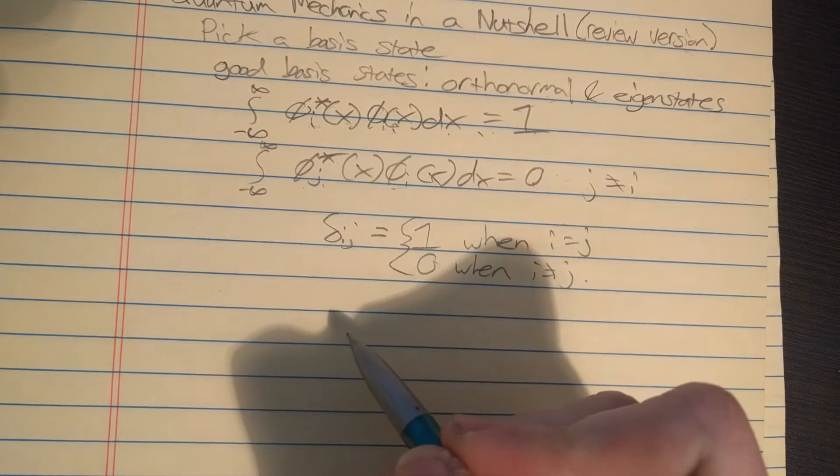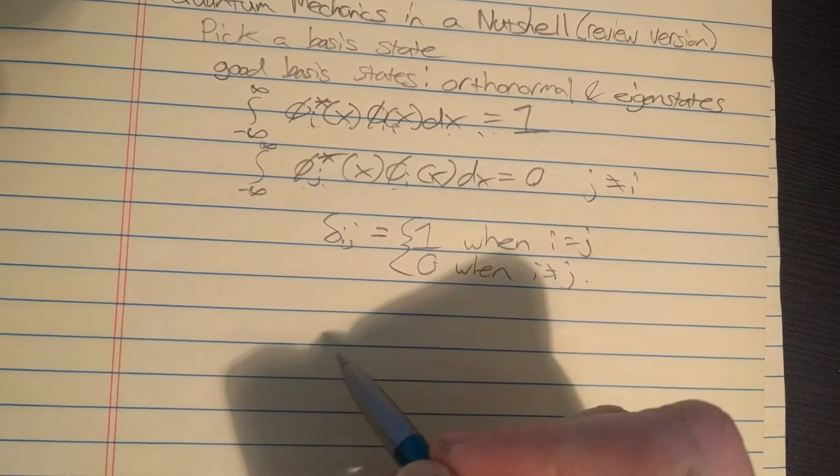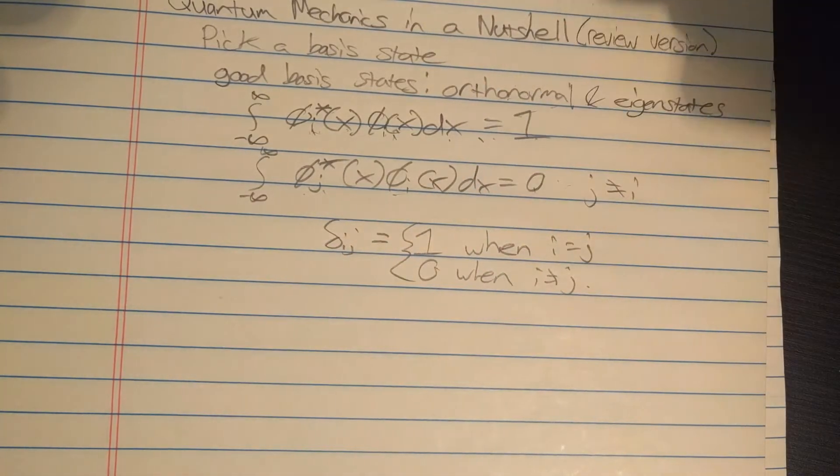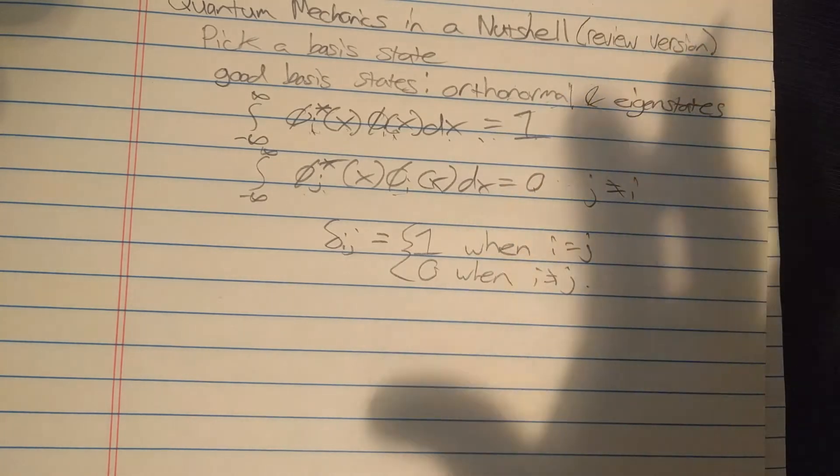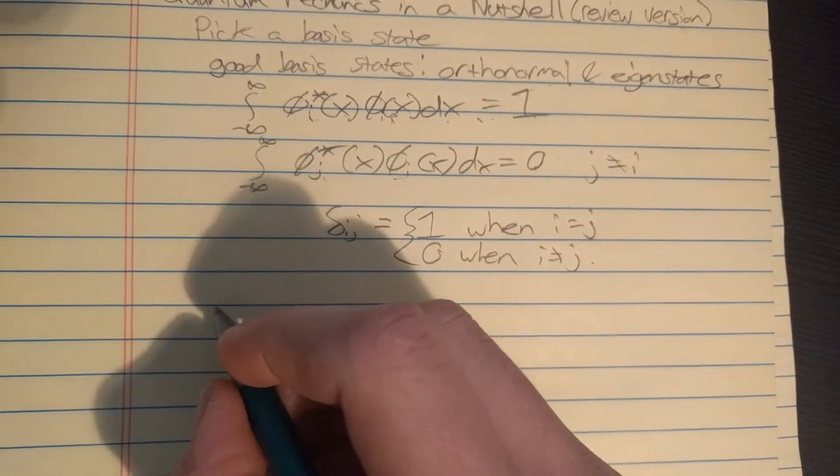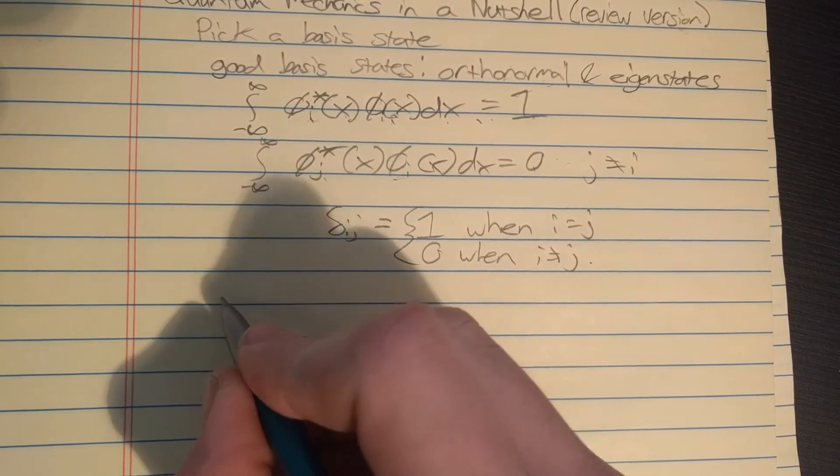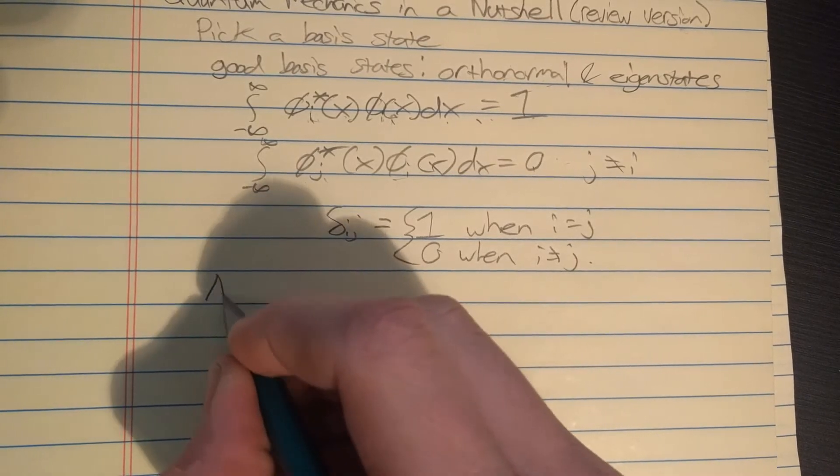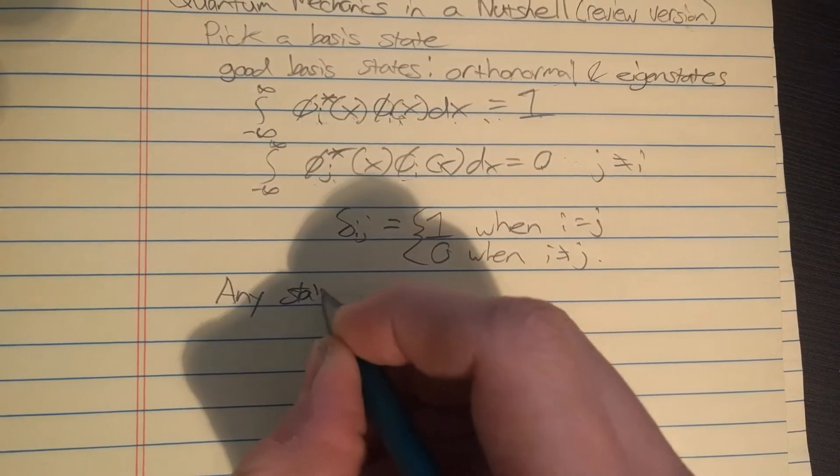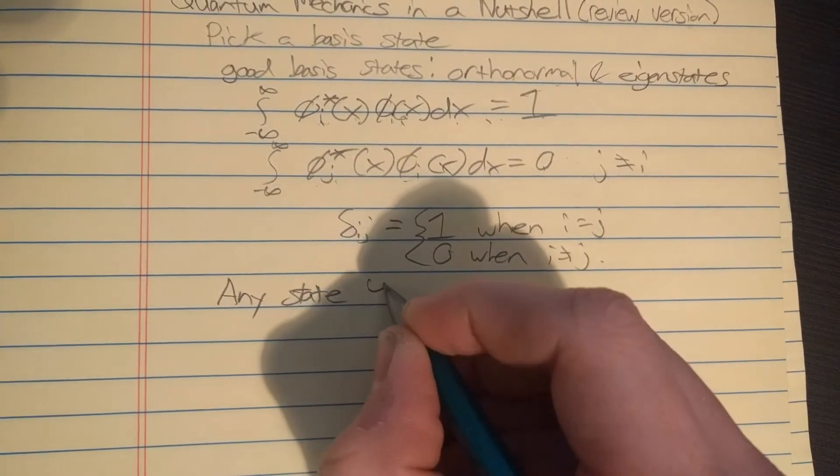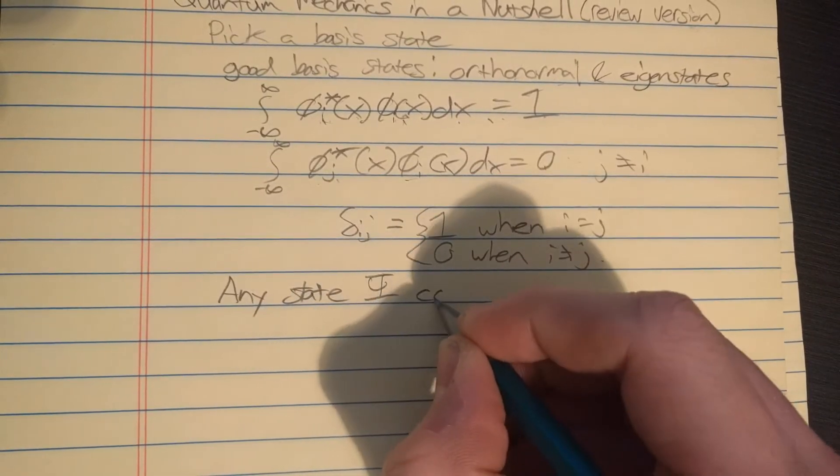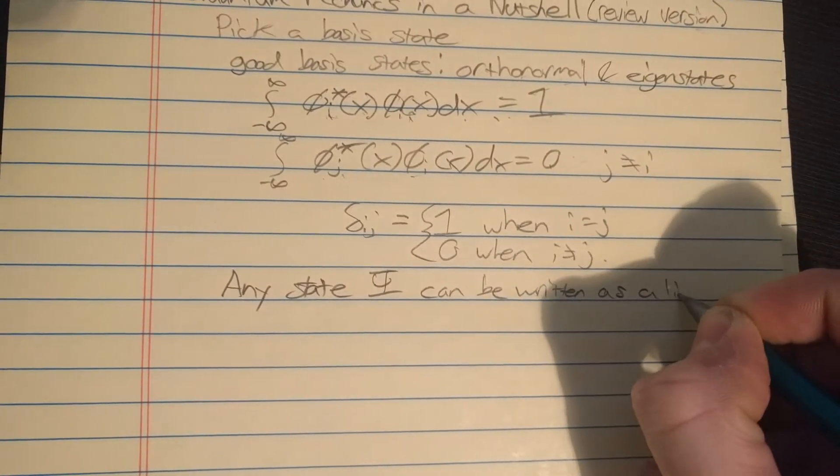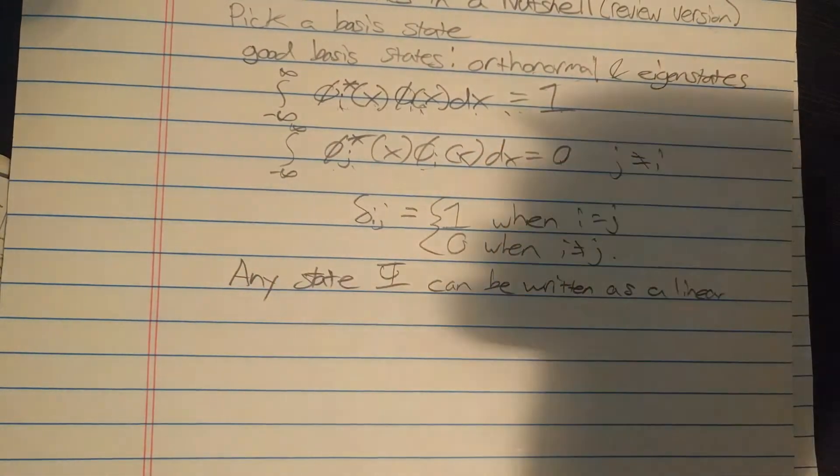So we got to pick basis states and they got to be orthogonal to each other and normalized. Those aren't necessary conditions, they just make things easier. Now let's try to get a more solid grasp on what a basis state is. Let's think of an analogy.